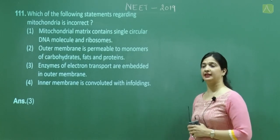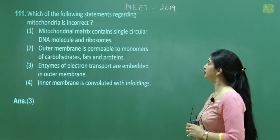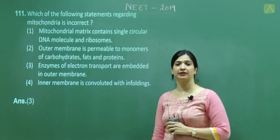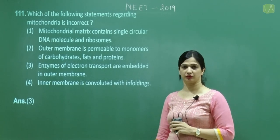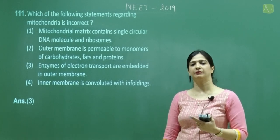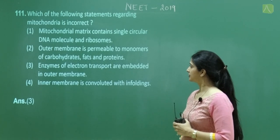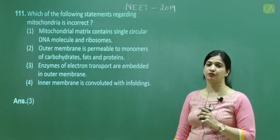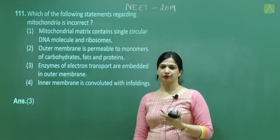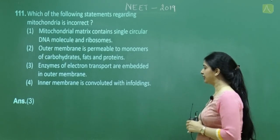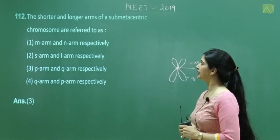Question number 111: Which statement regarding mitochondria is incorrect? Option 1 (mitochondrial matrix contains circular DNA and ribosomes) and option 2 (outer membrane is permeable to monomers of carbohydrates, fats, and proteins) are both correct. Option 3 states enzymes of the electron transport chain are embedded in the outer membrane — this is wrong; they are located on the inner membrane. The correct answer is option 3.